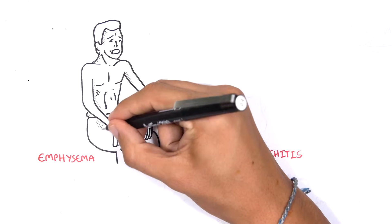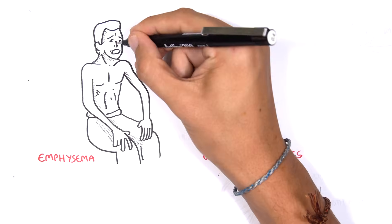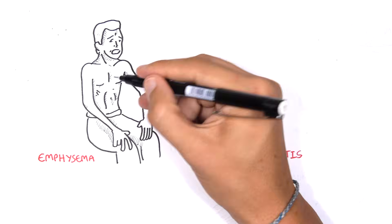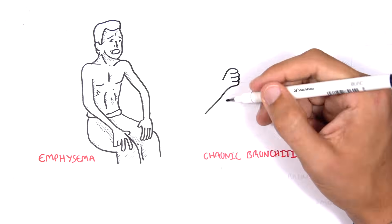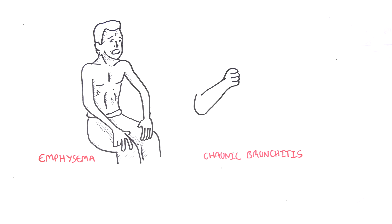Let us first begin by looking at the signs and symptoms of both of these. Patients with emphysema are also known as the pink puffers, because they have difficulty breathing, but are well perfused.